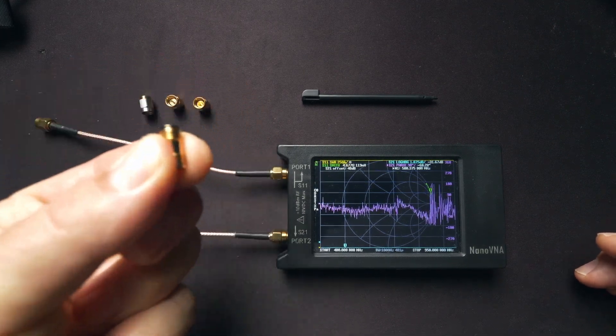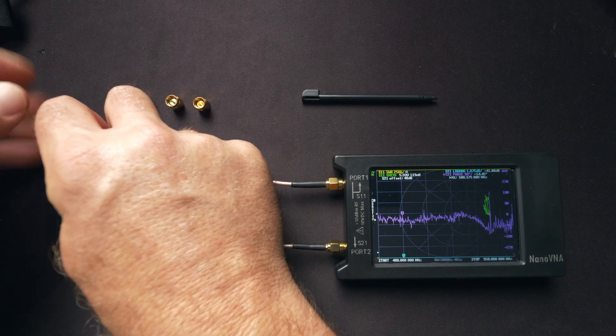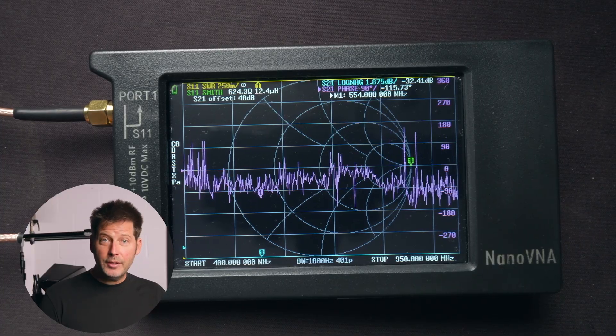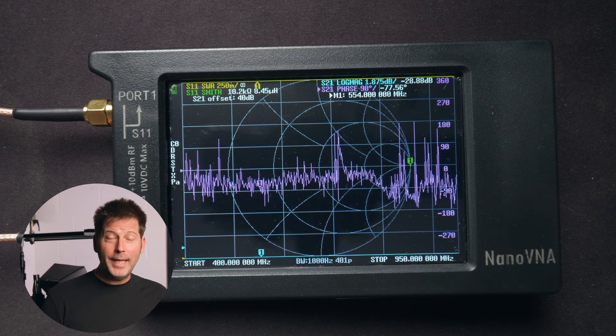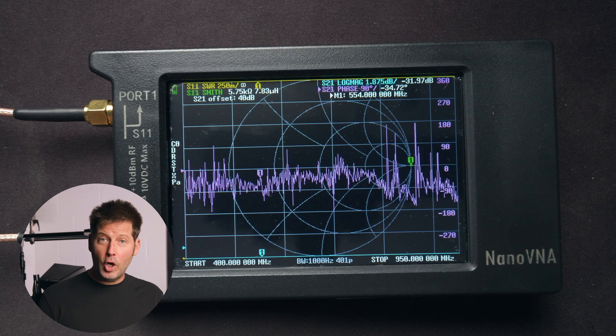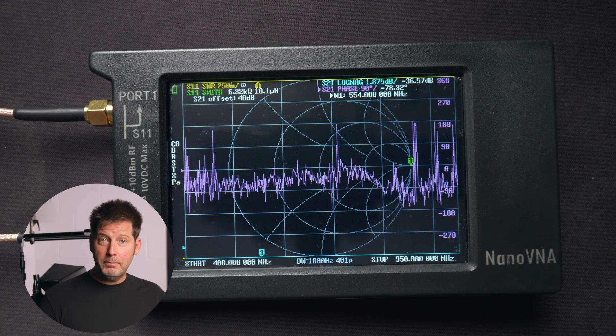We're going to attach the barrel here to port 1 or S11 so we can start our calibration. Now that we have the cables connected, the first step to any calibration is to choose our stimulus. In our case, that's going to be the frequency bandwidth that we want to measure.